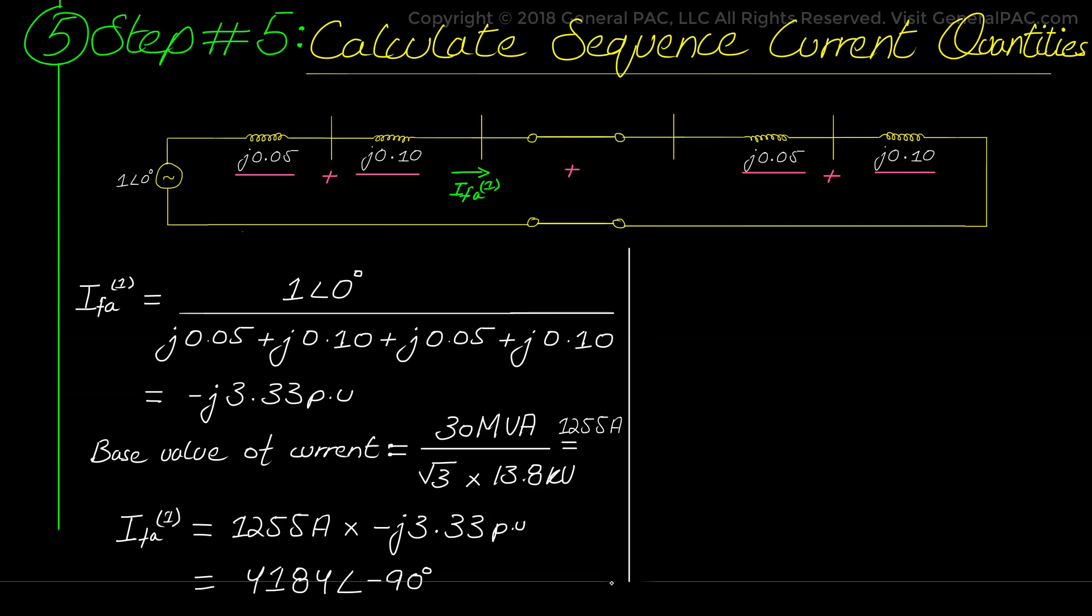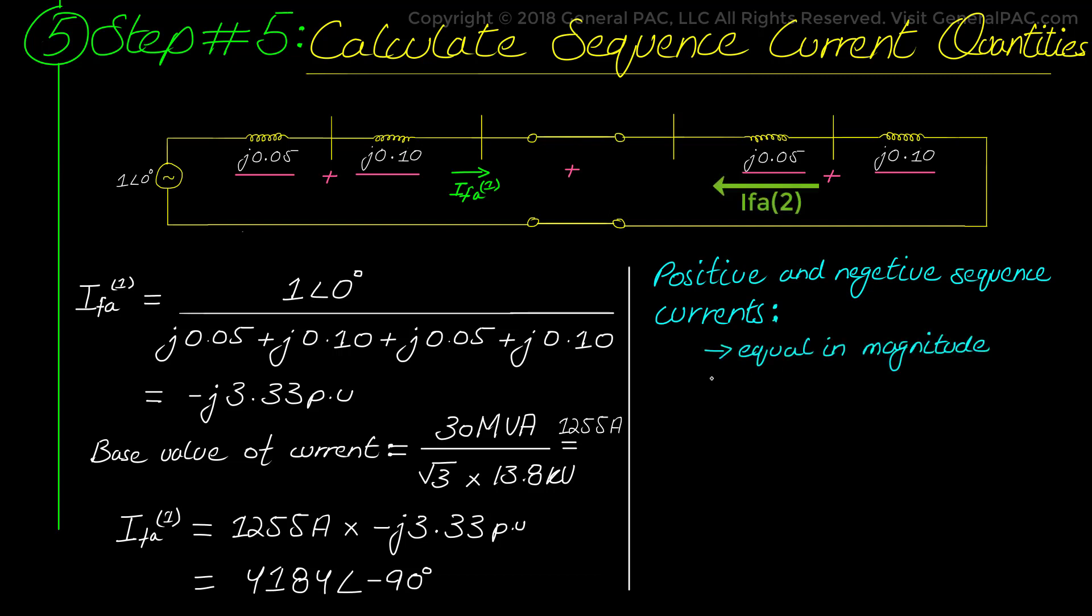It is also evident from the faulted sequence network that the positive and negative sequence current will be equal in magnitude because they are the same current in the loop, with the difference being that they have an opposite direction meaning that they are flowing in the opposite direction from each other. To account for that we give a 180 degrees phase shift in the positive sequence current to find the negative sequence current.